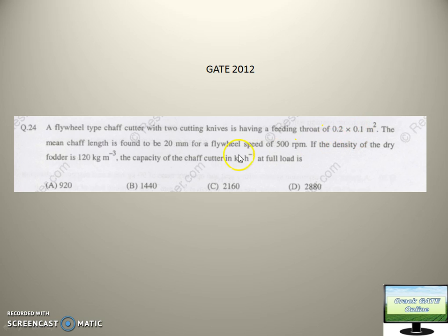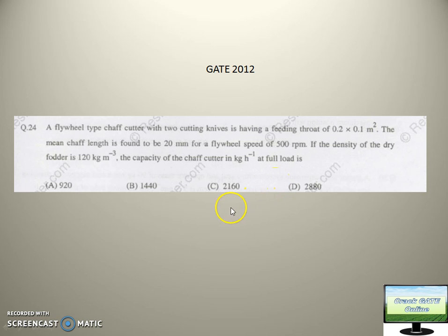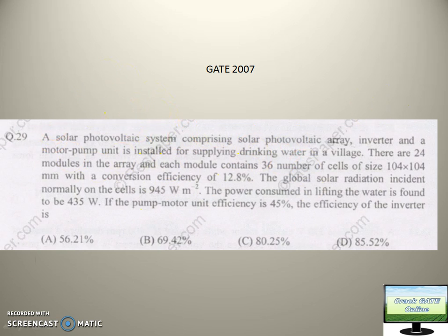So: 0.2 × 0.1 × 2 (since there are two knives) × 20 × 500, divided by 60 (to convert to per hour), equals 120 m³ per hour. Dividing by the density gives a capacity of 2880 kg per hour for the chaff cutter. Like this, many questions can be solved just by dimensional matching. Don't leave any question without reading it — 15 percent of questions can be solved without knowing any formula. Read the question carefully and see if you can solve it by dimensional matching.